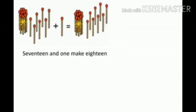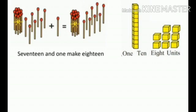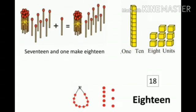Here, 1 bunch of math sticks is there — that is, 10 math sticks. With 7 math sticks, 17 plus 1 math stick equals 18 math sticks. 17 and 1 make 18. The 10-group of blocks is 1 ten and 8 blocks is 8 units. That is, 18, and the spelling of 18 is E-I-G-H-T-E-E-N.